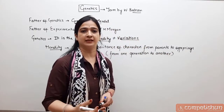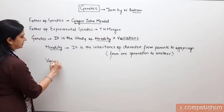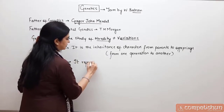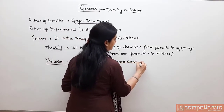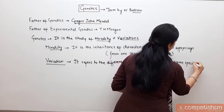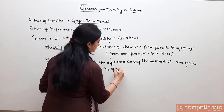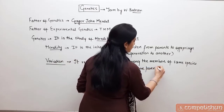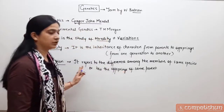Isi liye hum baut se characters mein apne parents ke similar rehte hain. Then ek aur term yahan par diya gaya hai, that is variation. Variations refer to the differences among the members of the same species or between the offsprings of the same parent. Hummare jo siblings hain, unse hum baut se characters mein differ karte hain — that is because of the variations.